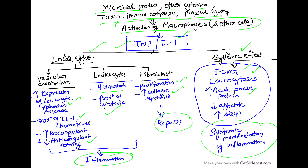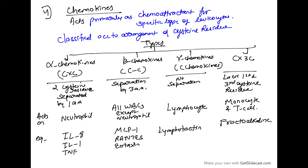There is one more class: chemokines. Chemokines are a specific class that act as chemoattractants for specific types of leukocytes. They are classified on the basis of the arrangement of cysteine residues into four types: alpha (CXC), beta (CC), gamma (C), and CX3C chemokines.